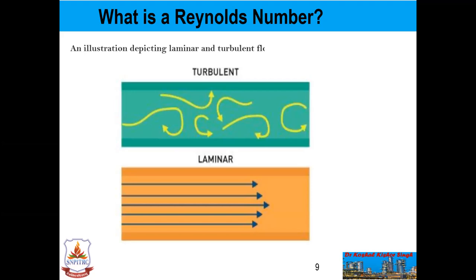The Reynolds number is named after the British physicist Osborne Reynolds, who discovered this while observing different fluid flow characteristics, like the flow of liquid through a pipe and the motion of an airplane wing through the air. He also observed that the type of flow can transition from laminar to turbulent quite suddenly.